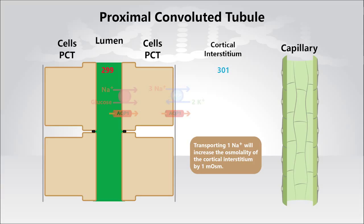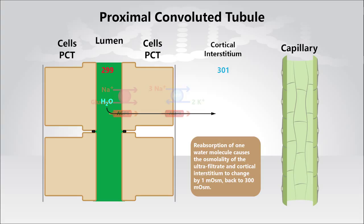This change in osmolality by one milliosmol is sufficient to create an osmotic gradient to cause one water molecule to be reabsorbed from the ultrafiltrate across the apical and basolateral membranes of the proximal tubule cells into the cortical interstitium.